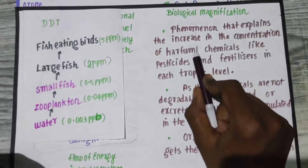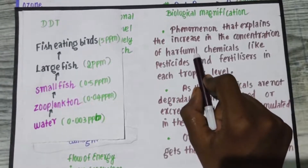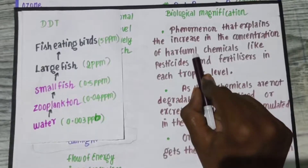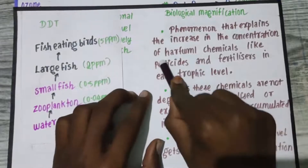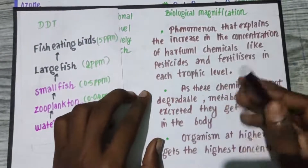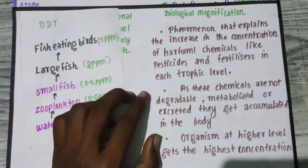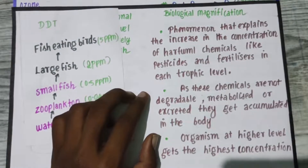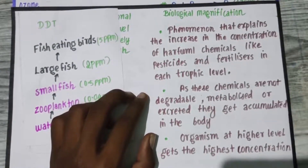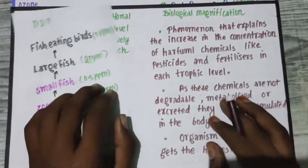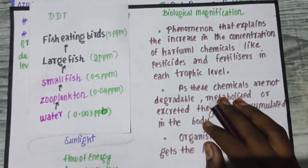If you look at the food chain, there is a frog. The concentration in the frog is higher than in the paddy. The concentration in the snake is higher than in the frog. So, the concentration increases at each level — this is biological magnification.